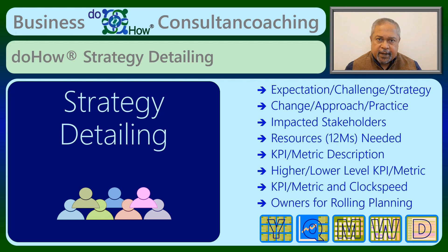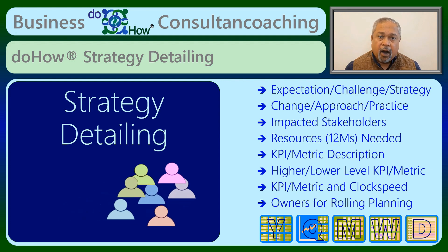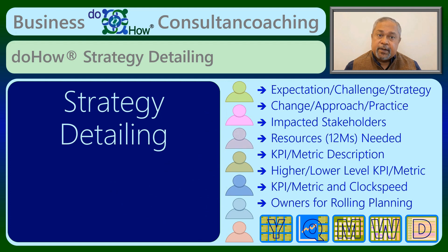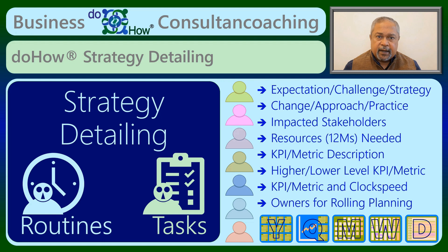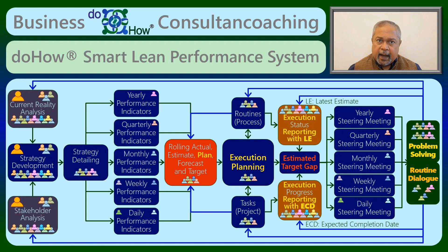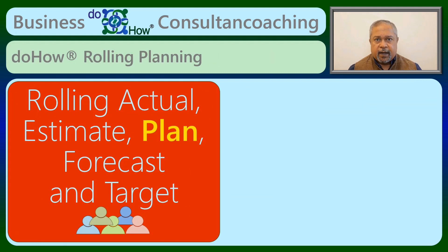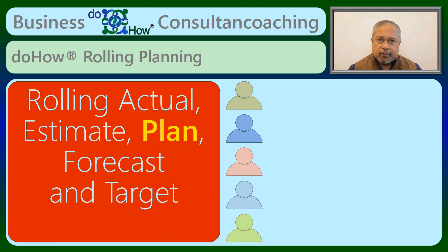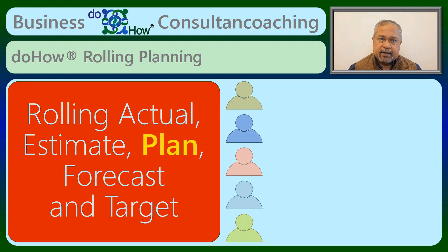The impacted stakeholders and the necessary resources are then identified, followed by detailing the KPI or metric along with cascading them till the action level. Strategy detailing is done by an individual or key players in a company. At this stage, the routines and tasks for everyone is identified as per their respective roles and individual goals. The rolling actual, estimate, plan, forecast and target is prepared by each of the KPI owners defined in the strategy detailing.